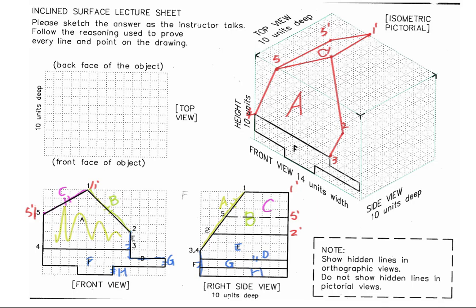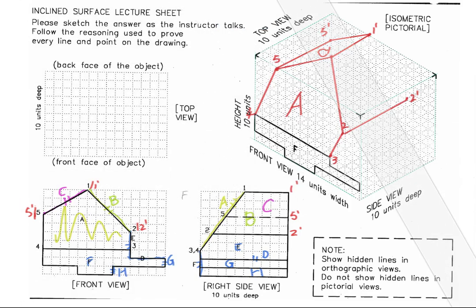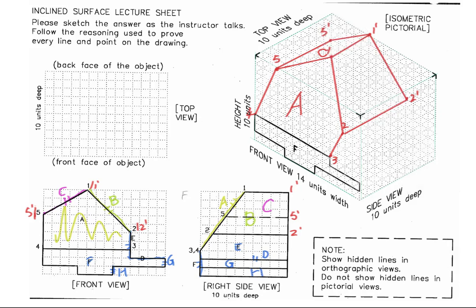Foreshortened surface B involves number 1, number 2, 1', and 2'. In the depth direction, check where 2' is — how far 2' is from number 2. Have all the numbers connected to see the foreshortened surface B in the isometric view.